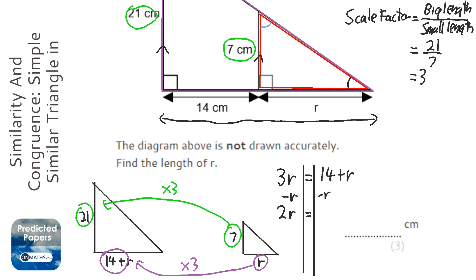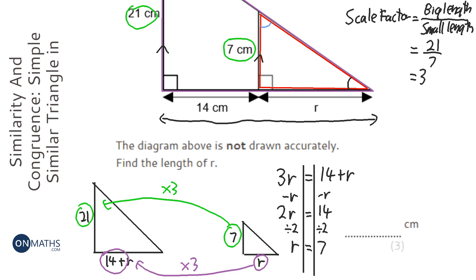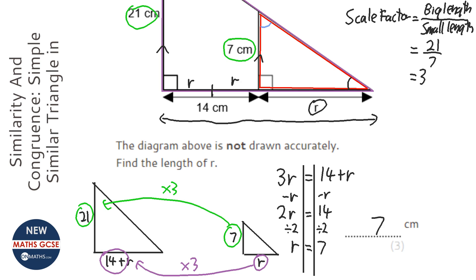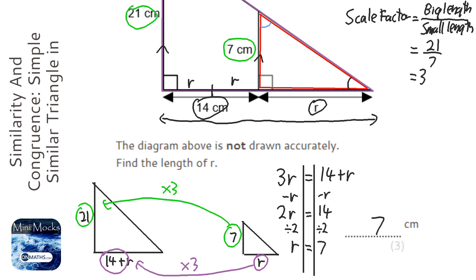So 2r equals 14, and then dividing both sides by 2, r equals 7. You could have got this through trial and improvement. Another way to think about it is the new length is 3 lots of r, so the 14 has to be divided into two equal parts of r — giving 7 and 7. There are other methods, but writing an equation is the most mathematically sound approach. If you found the answer using a different method, please continue using that method.